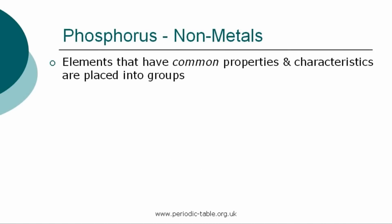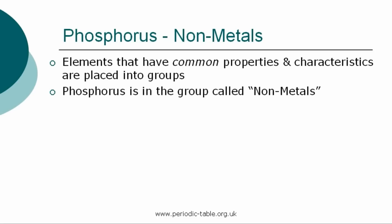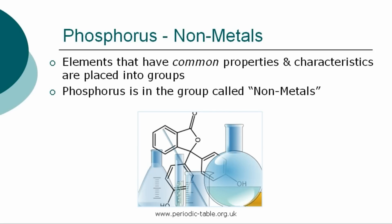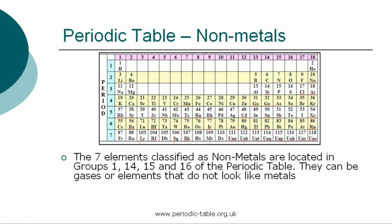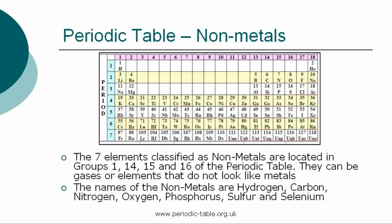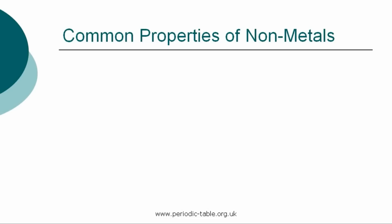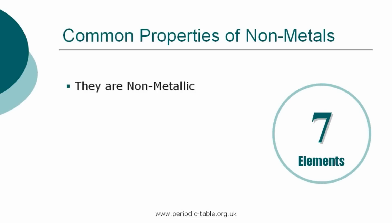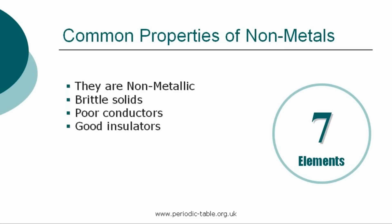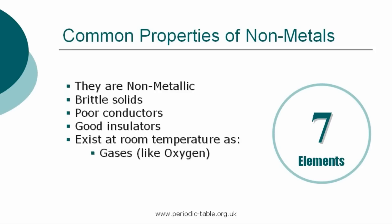Once the properties of an individual element have been identified, it is placed into a group of elements which have common properties and characteristics. Phosphorus is in the group called the non-metals. The seven elements classified as non-metals are located in groups 1, 14, 15, and 16 in the periodic table. The names of the non-metals are hydrogen, carbon, nitrogen, oxygen, phosphorus, sulfur, and selenium. Non-metals do not look like metals and can be described as brittle solids. They are poor electrical and thermal conductors, but great insulators. Non-metallic elements exist at room temperature as gases, such as oxygen, and also as solids, such as carbon.